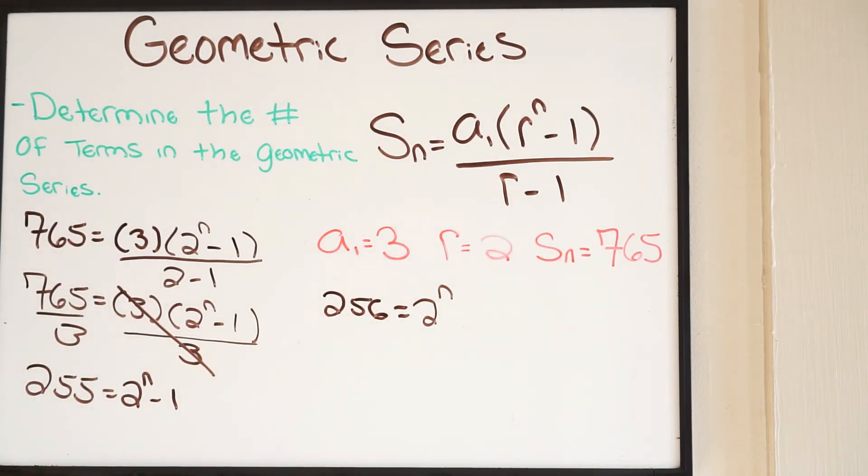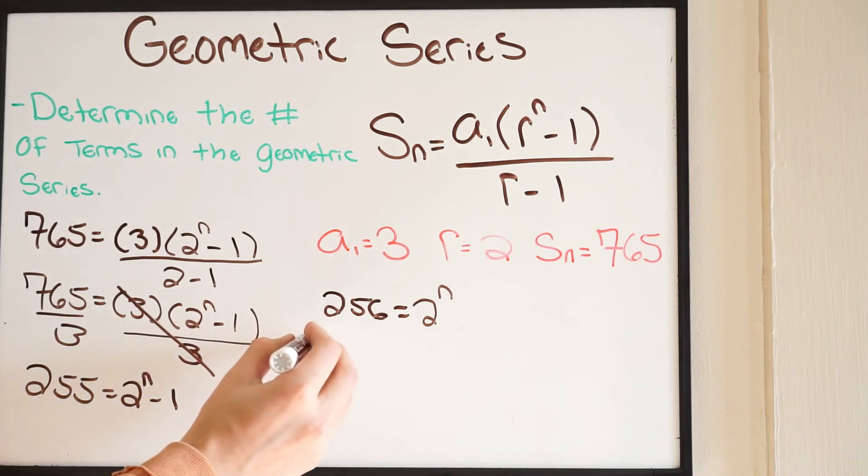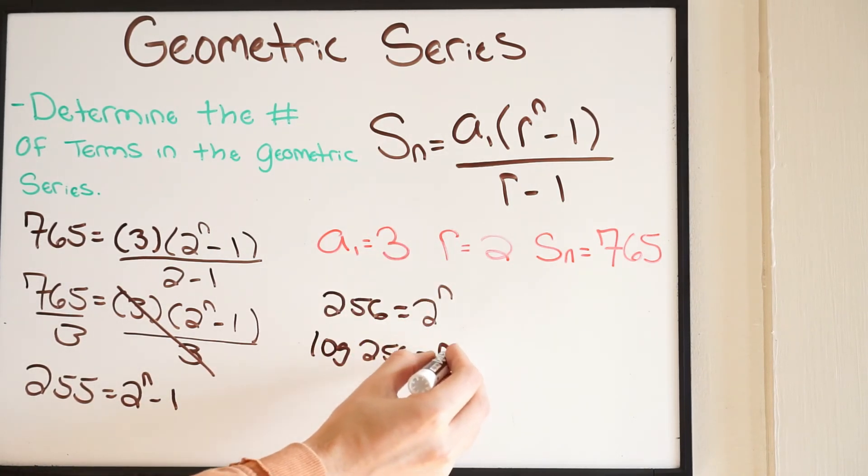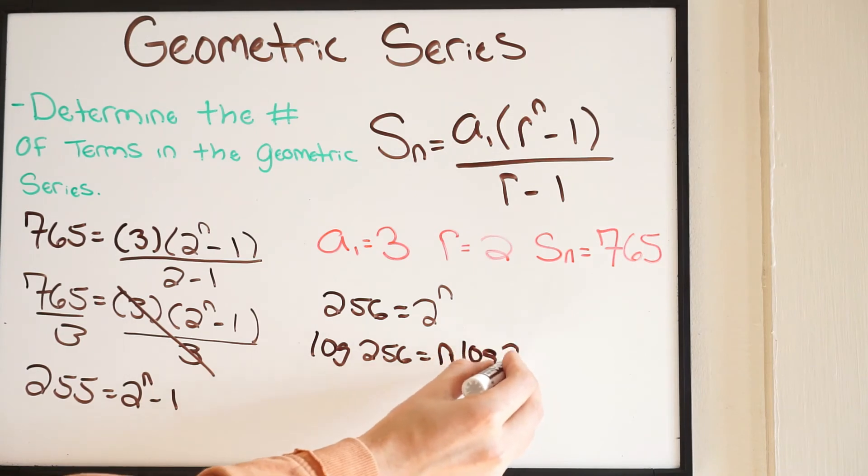Now, at this point, you have to go back to your properties of logs. We know that if we're solving for an exponent here, we can take the log on both sides, and that will bring down this exponent. This is going back to the properties of logs. So doing that, we're going to get log of 256 equal to the exponent comes down, and then we get N times log of 2.